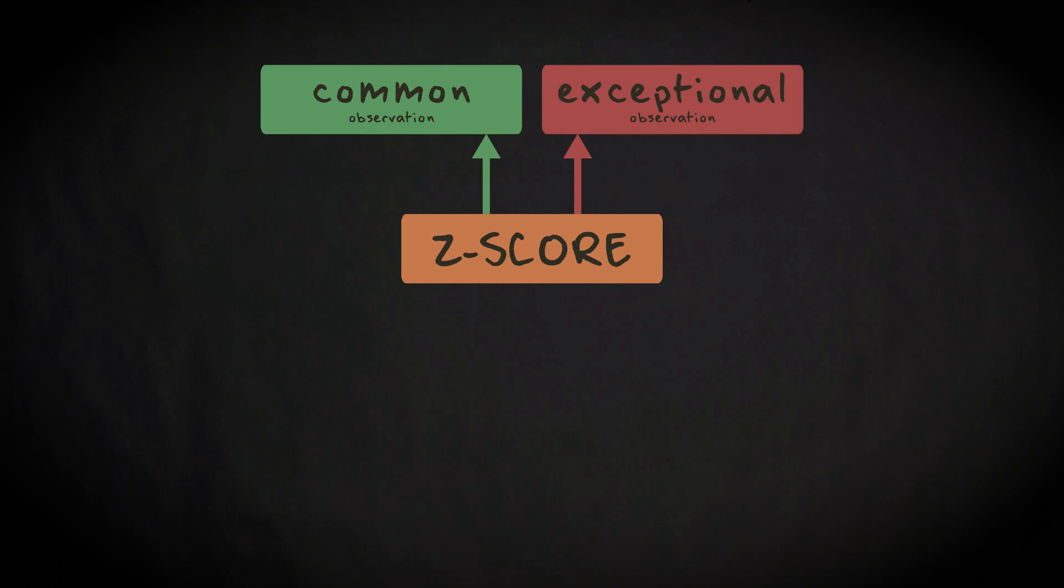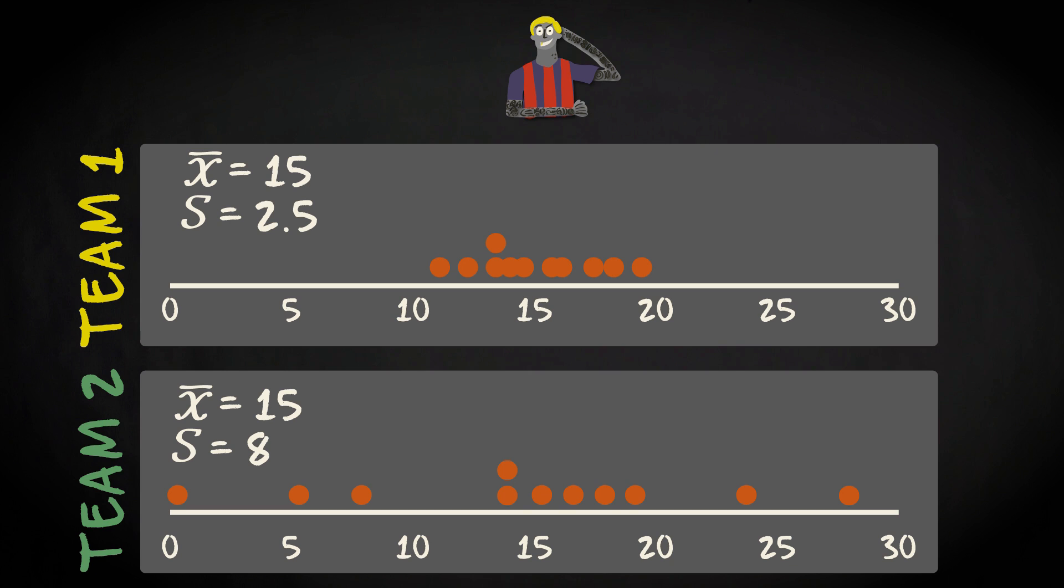Z-scores are even more useful if you want to compare different distributions. Let's, for example, look at the question whether a score of 19.3 is common or not. The z-score is 19.3 minus 15 divided by 2.5. That equals 1.72.